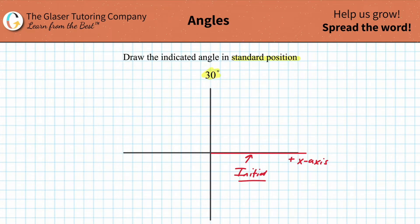Now what we need to do is rotate counterclockwise - you can kind of think about it as to the left - counterclockwise from the positive x-axis. We have to rotate a degree measure of 30 degrees from that positive x-axis.